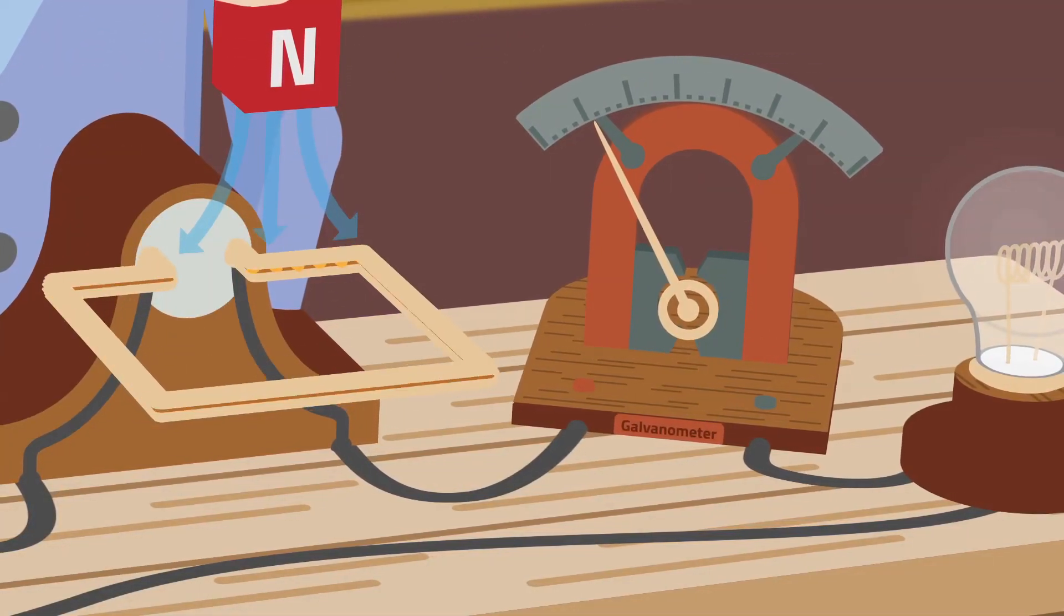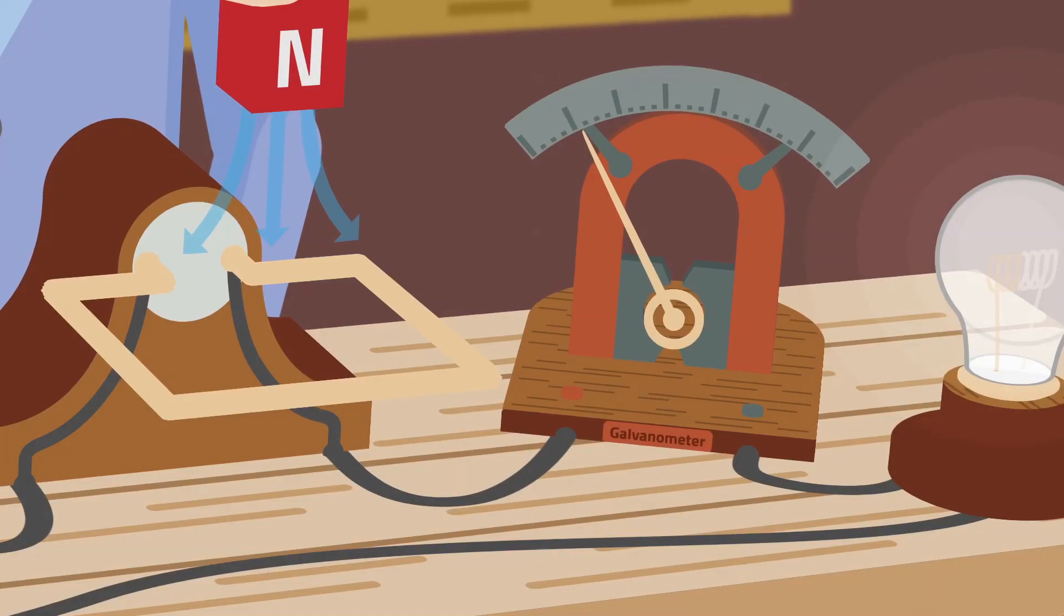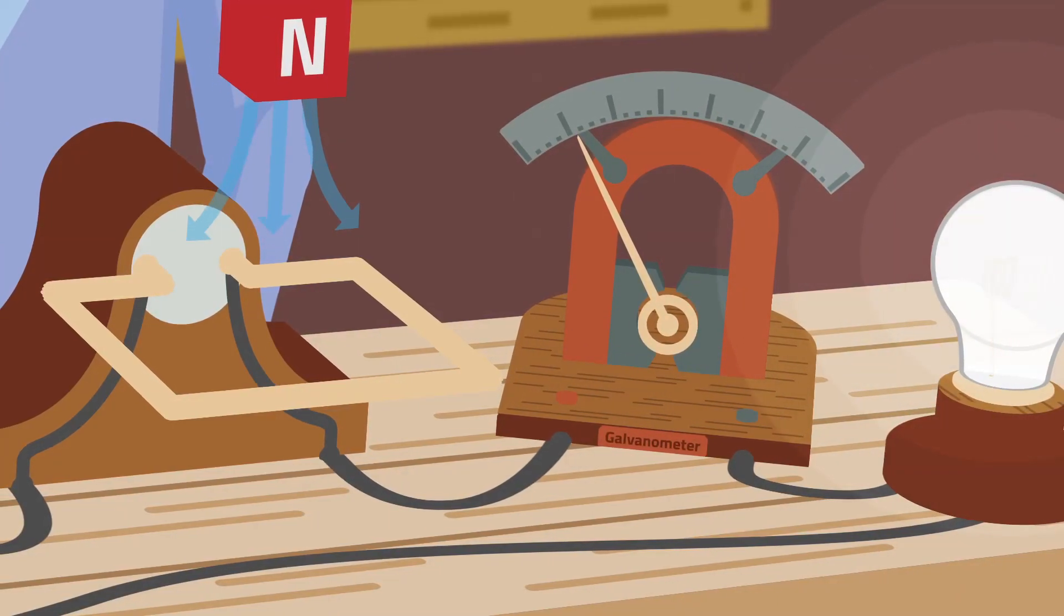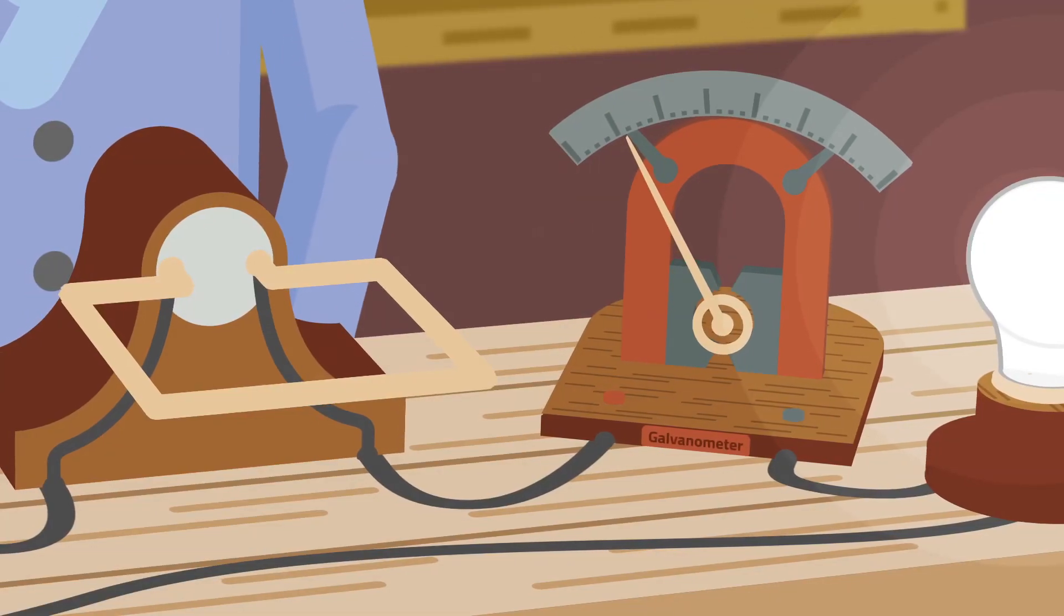When we connect a load between the two ends of the copper winding, for instance a lamp or a resistor, a current starts to flow.